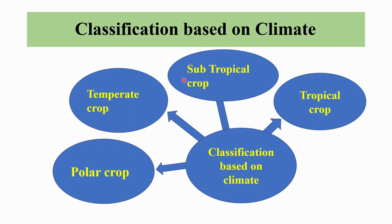Classification based on climate is divided into four types: tropical crops, subtropical crops, temperate crops, and polar crops. Tropical crop examples include coconut and sugarcane. Subtropical crops include rice and cotton. Temperate crops include wheat and barley. Polar crops include all alpine pasture grasses.